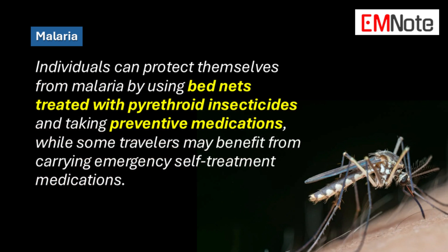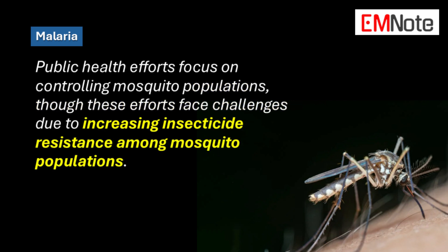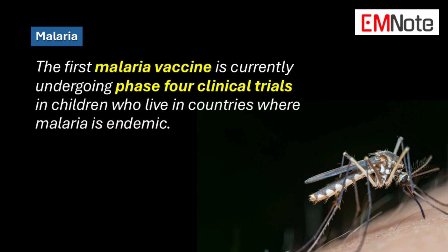Individuals can protect themselves from malaria by using bed nets treated with pyrethroid insecticides and taking preventive medications, while some travelers may benefit from carrying emergency self-treatment medications. Public health efforts focus on controlling mosquito populations, though these efforts face challenges due to increasing insecticide resistance. The first malaria vaccine is currently undergoing phase four clinical trials in children who live in countries where malaria is endemic.